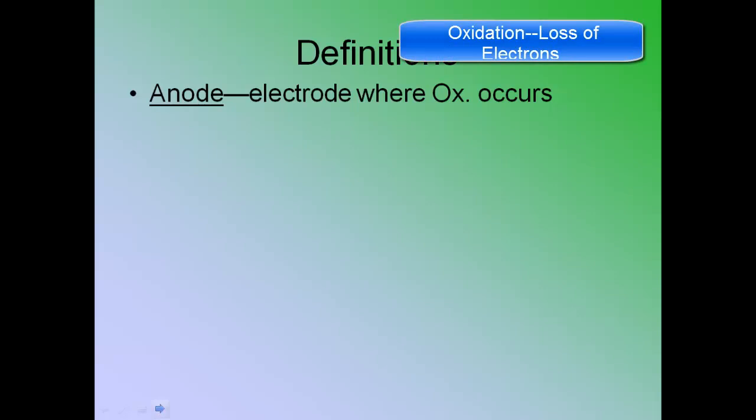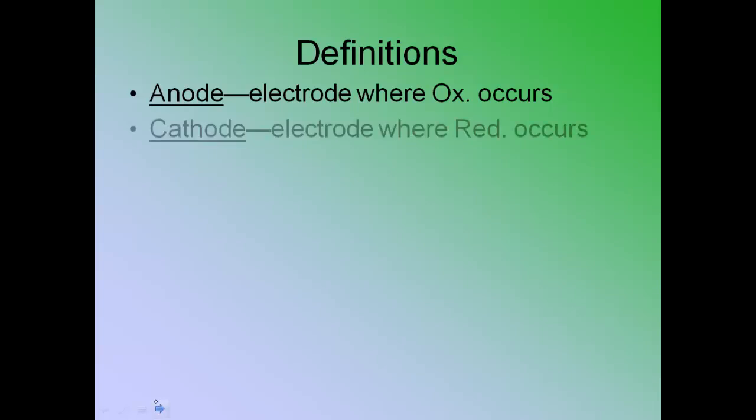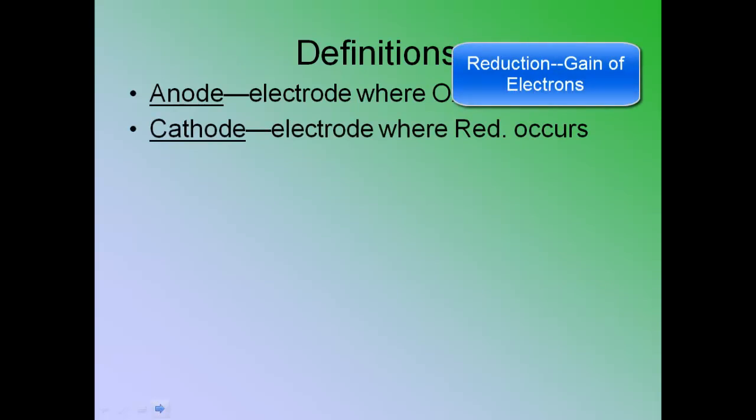So, anytime a substance loses electrons, it is undergoing oxidation. The oxidation, the word oxidation, comes from oxygen. So, it used to mean anything that gained oxygen was being oxidized. But now we realize that it's electron movement. So, anything that loses electrons is oxidation. Anything that gains electrons is reduction.